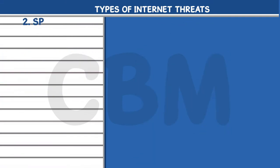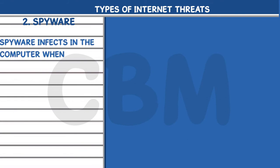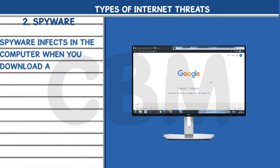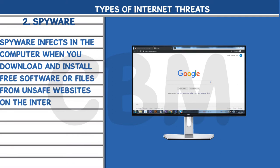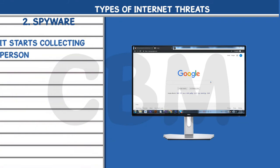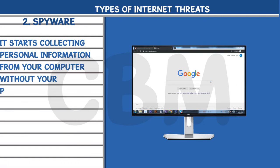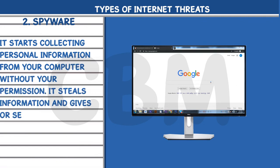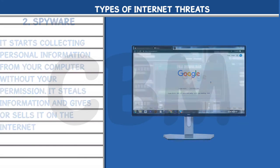2. Spyware: Spyware infects the computer when you download and install free software or files from unsafe websites on the Internet. Once a spyware program is installed, it starts collecting personal information from your computer without your permission. It steals information and gives or sells it on the Internet.